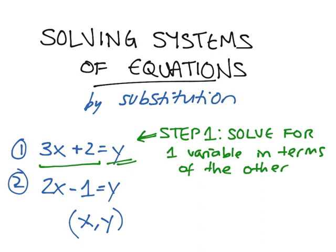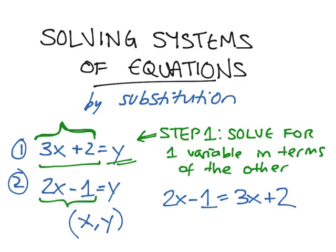Our second step is to take the value we got. So here, 3x plus 2 is equal to y. And we plug it in for that value in the second equation. So, here, 2x minus 1 is equal to y. And since our first equation says 3x plus 2 is also equal to y, and we're finding x and y values which satisfy both these equations, then 2x minus 1 must be equal to 3x plus 2. And now, we've got an equation in one variable which we already know how to solve.